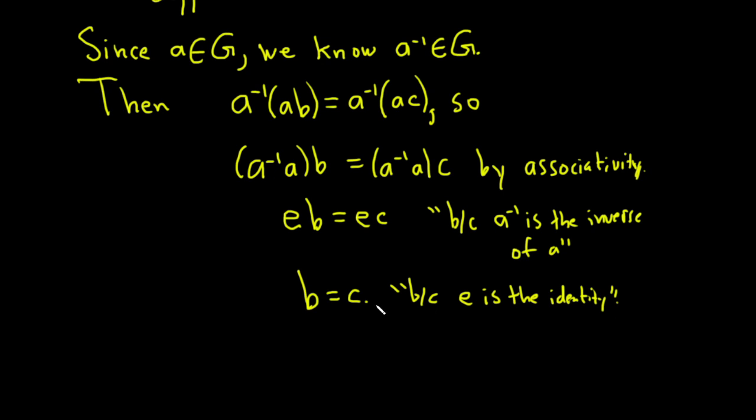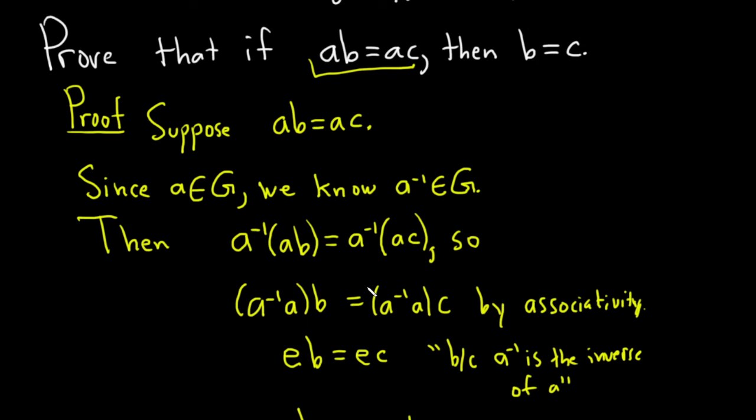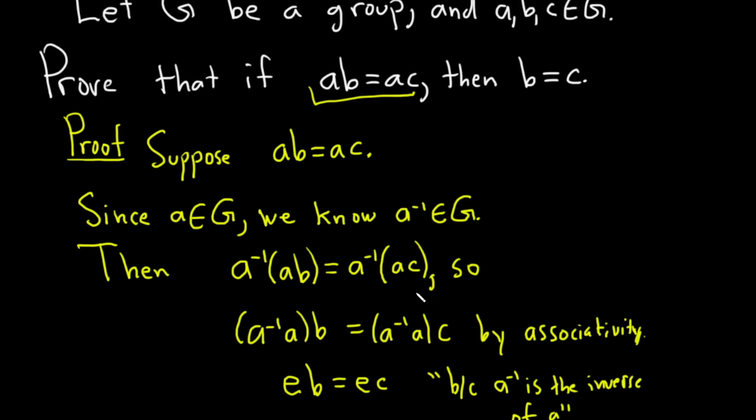And so that completes the proof. So again, let's just go over it really quickly. So we start by assuming that ab is equal to ac. And the goal here is to get rid of the a.